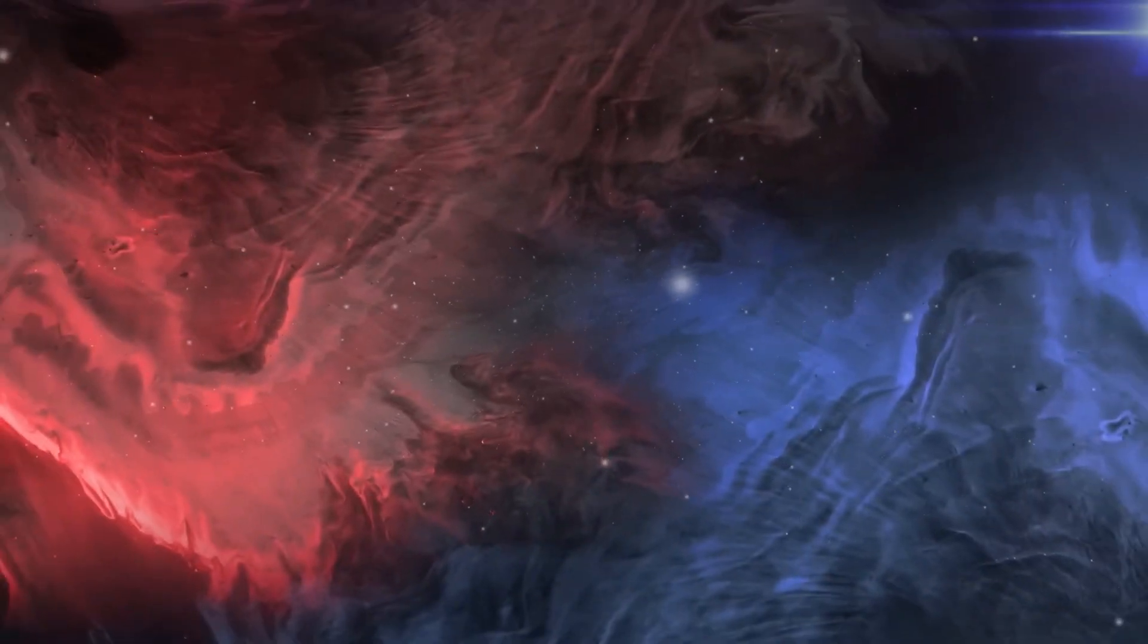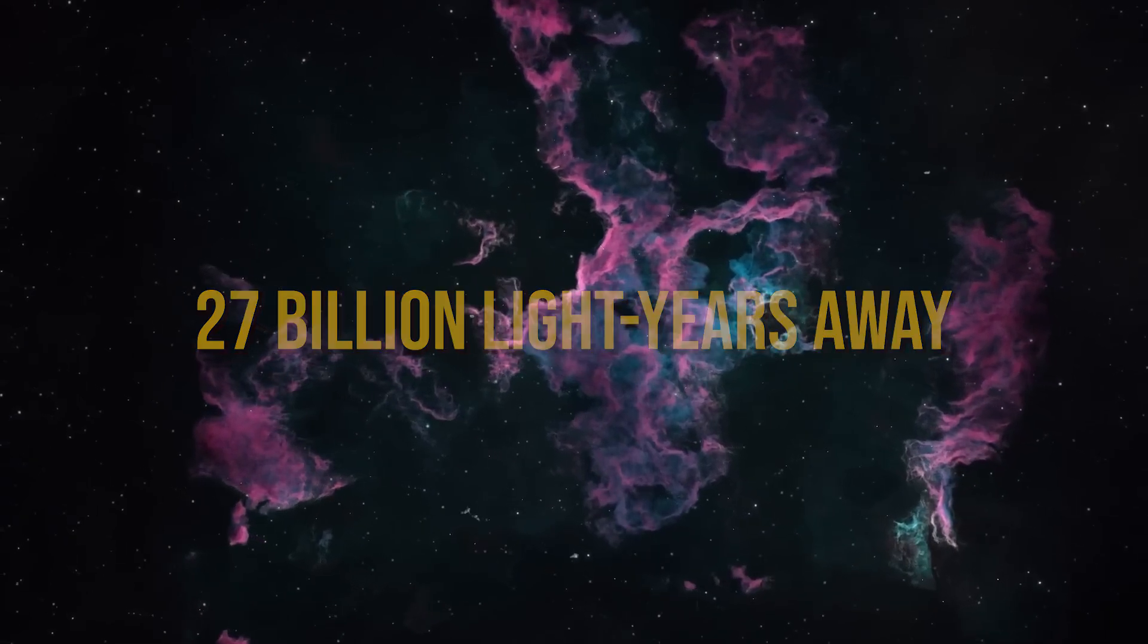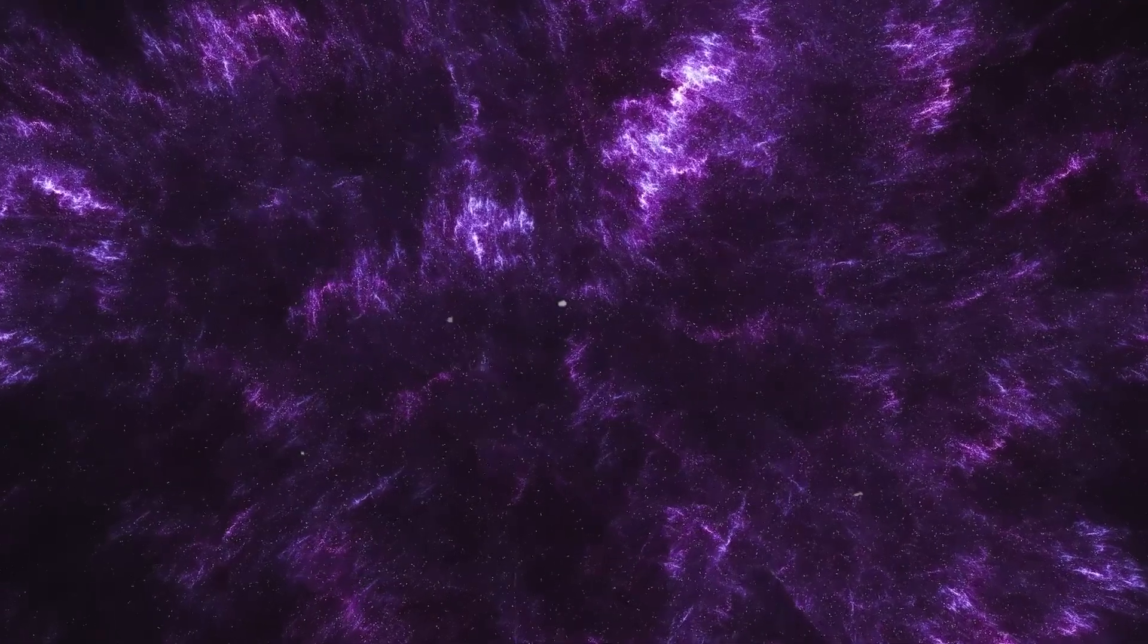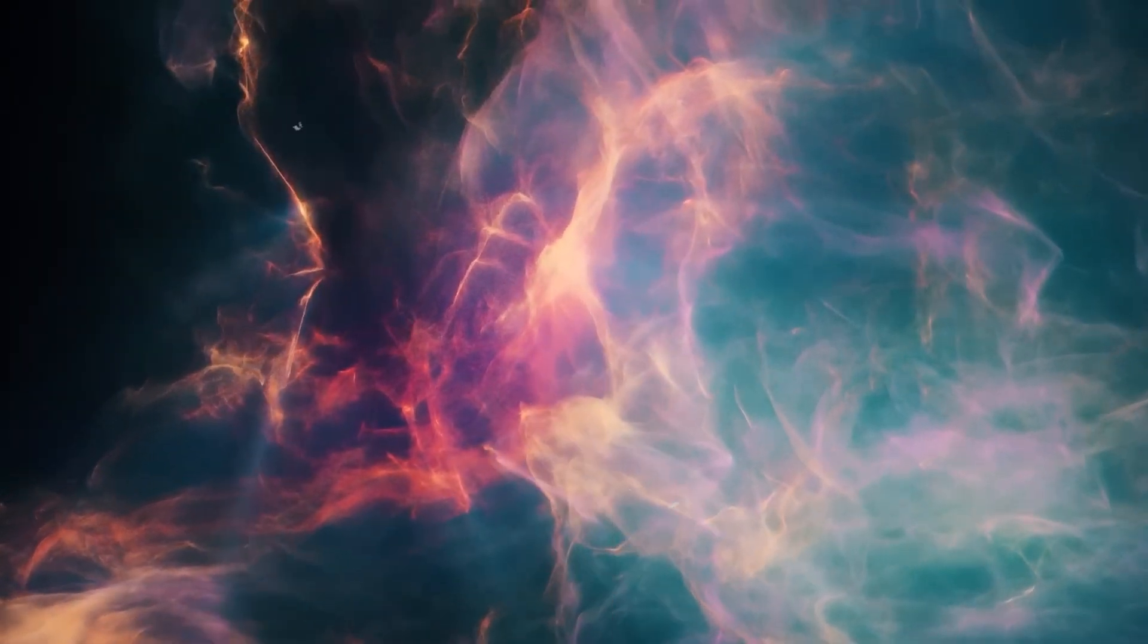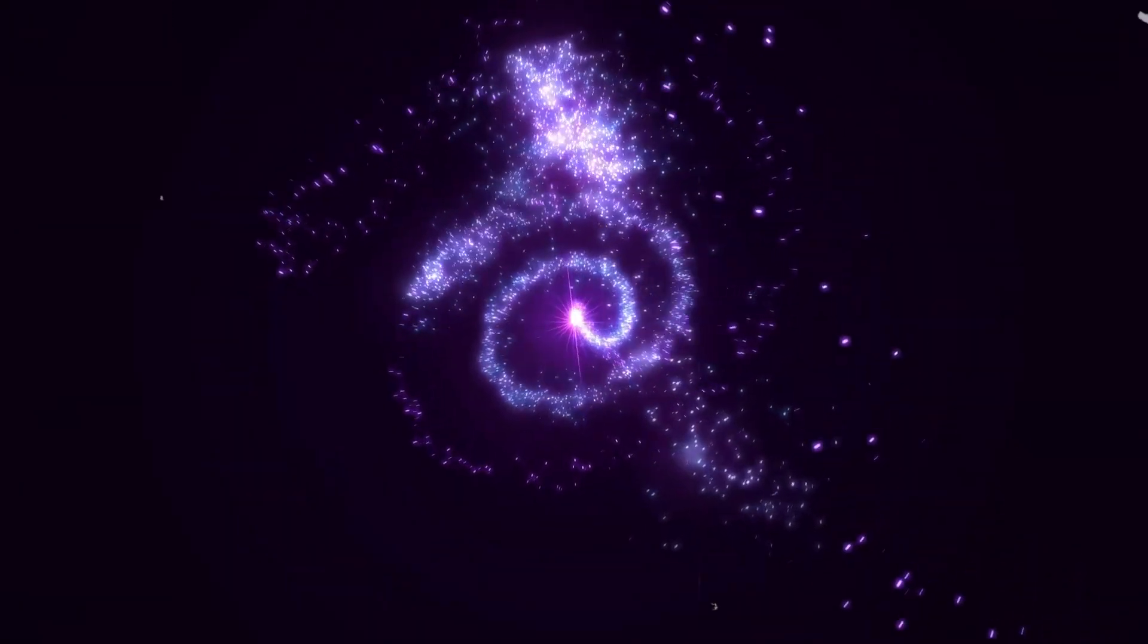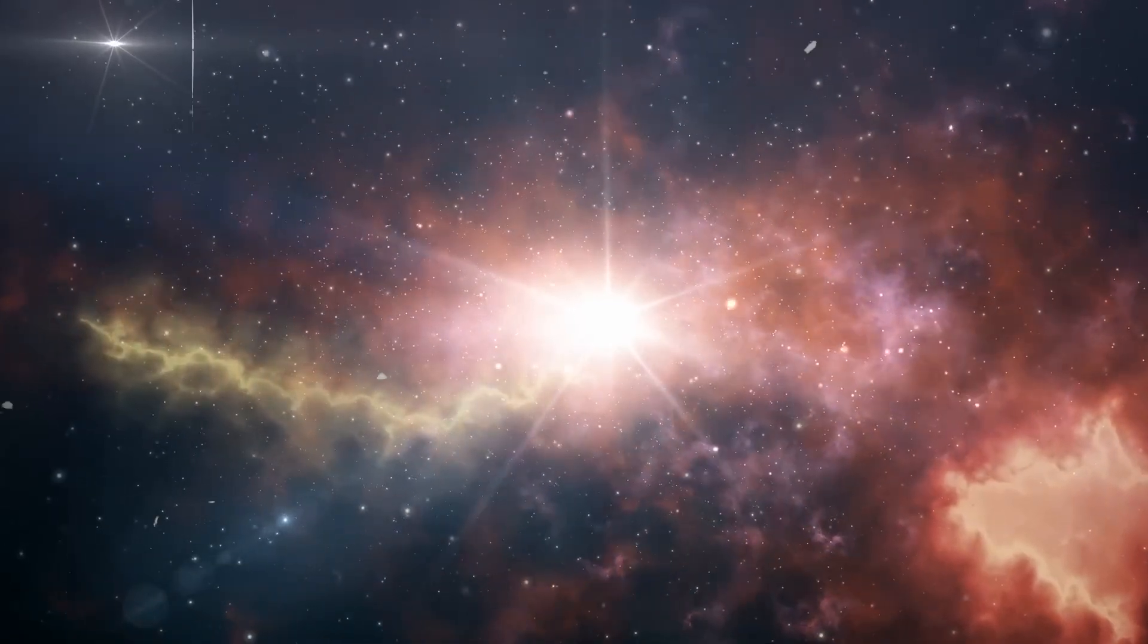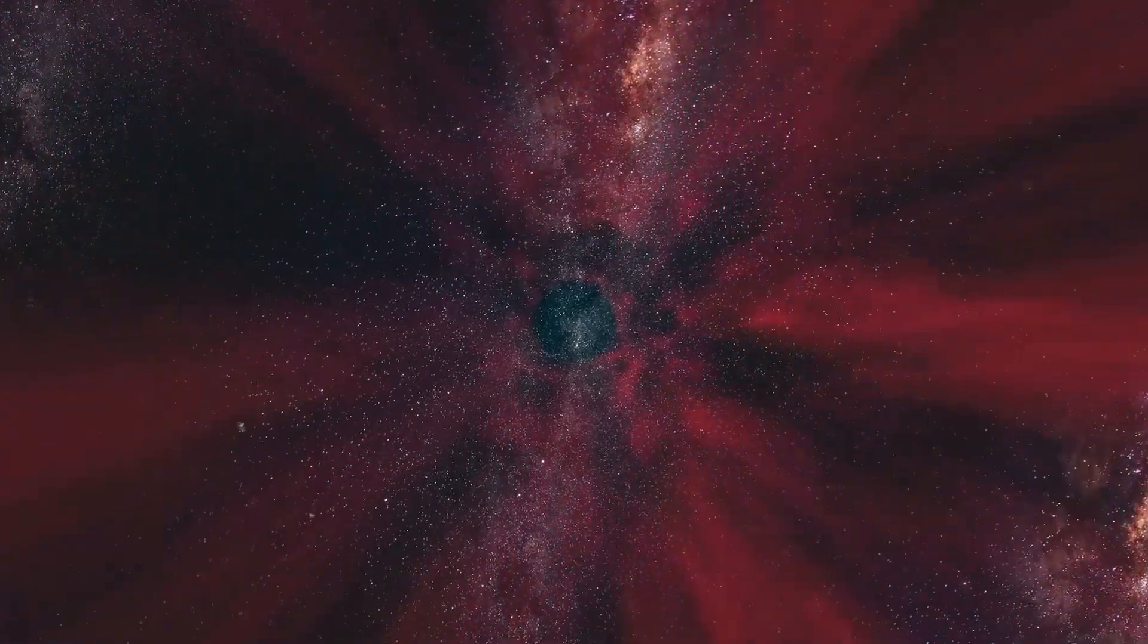As we journey back to around 27 billion light-years away, when the universe was just a billion years old, we hit a cosmic speed bump. Star formation takes a nosedive, dropping to a fraction of its peak rate. The universe's ingredient list changes too. Heavy elements, crucial for rocky planets like ours, become as rare as a cosmic unicorn. It's like the cosmic kitchen ran out of key ingredients, making rocky planets seem like a distant dream.